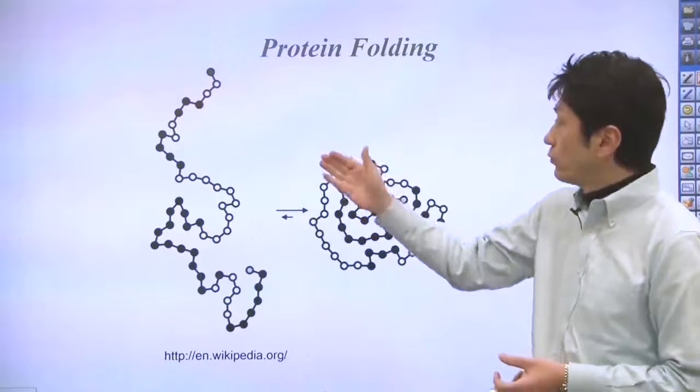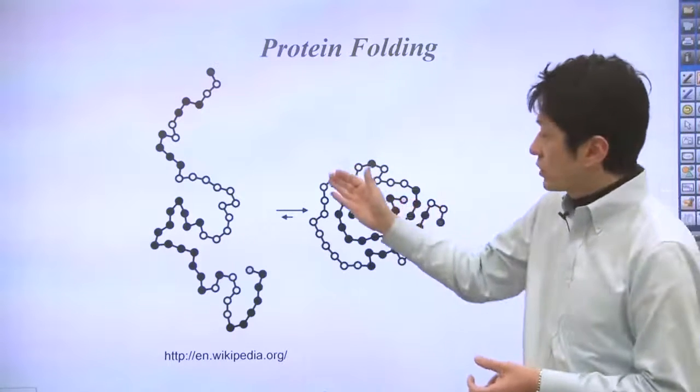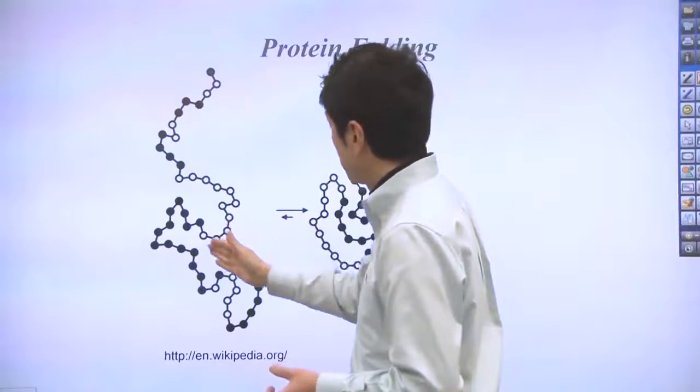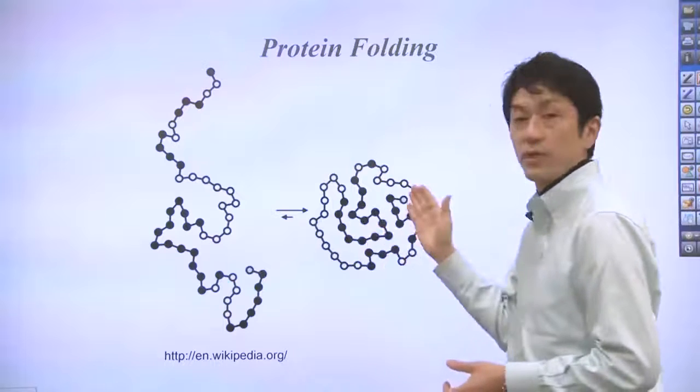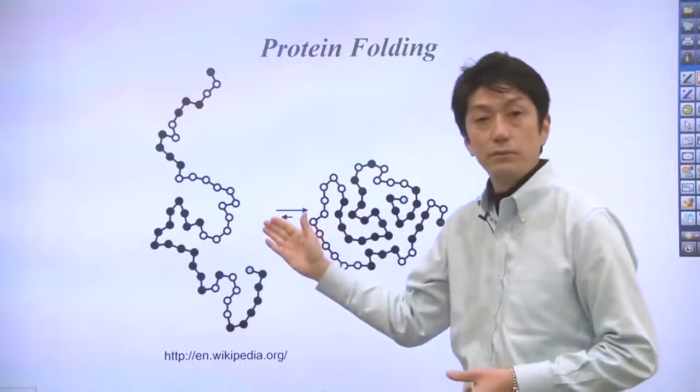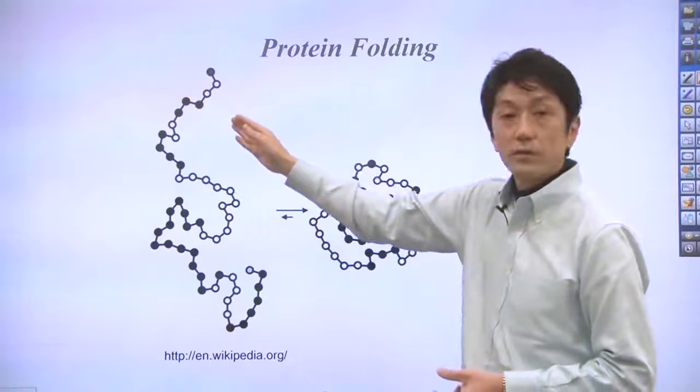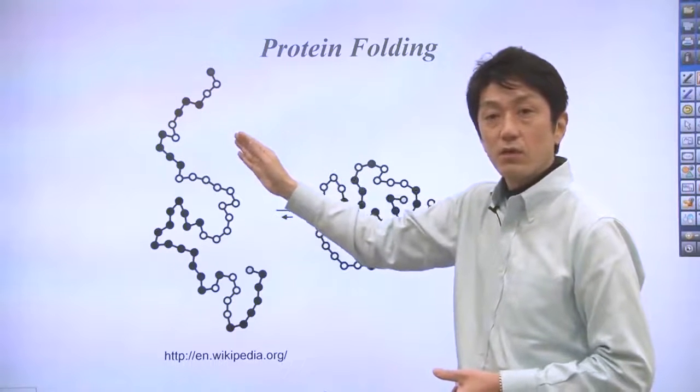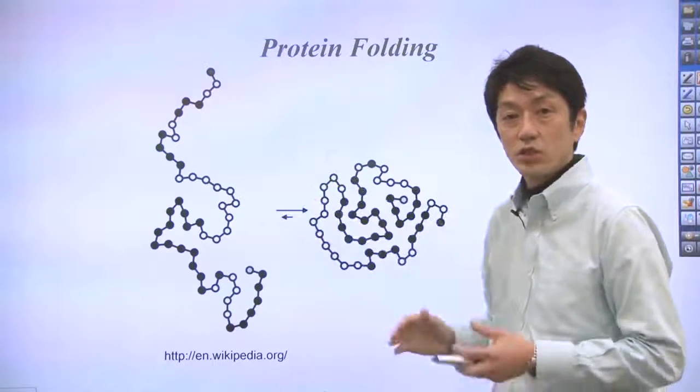Here is an example of protein folding. You can see the peptide right here. This is a folded version of peptide. In this example, hydrophobic amino acids or greasy amino acids are shown in black.